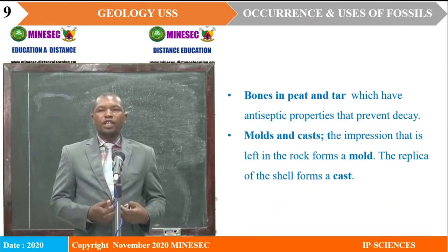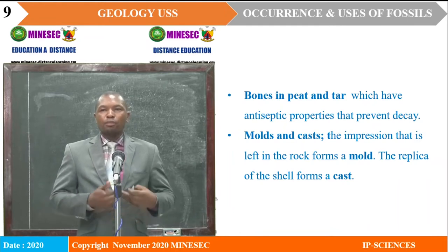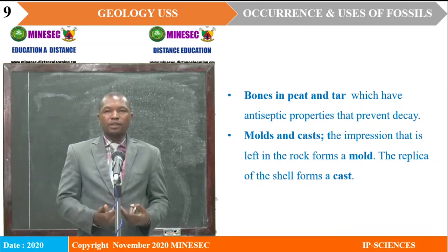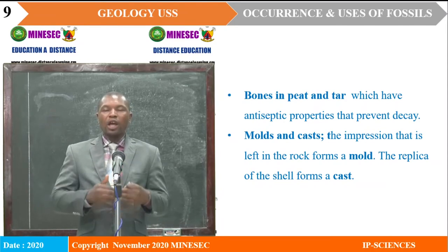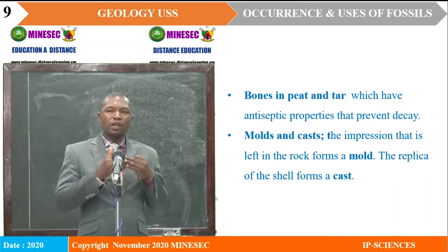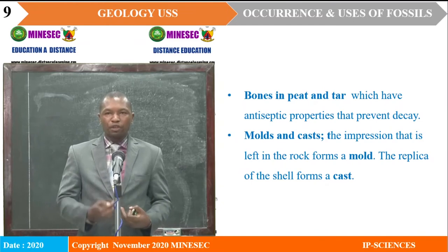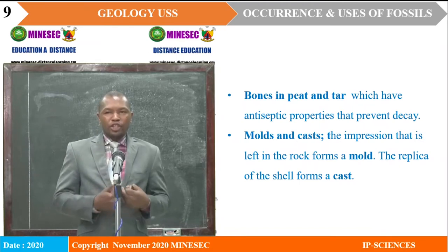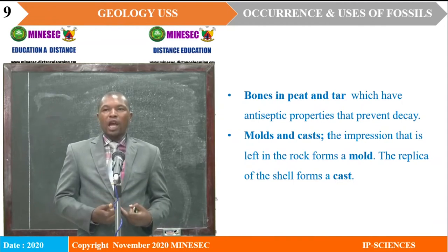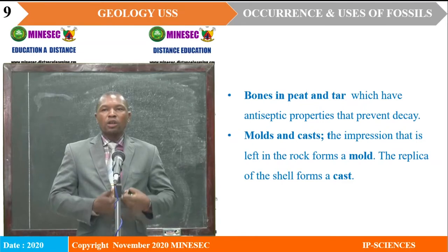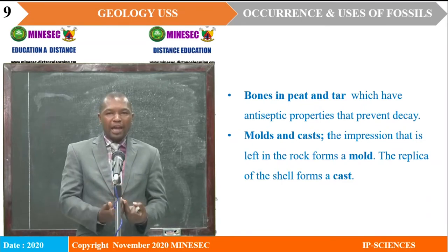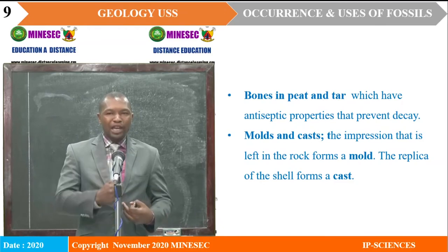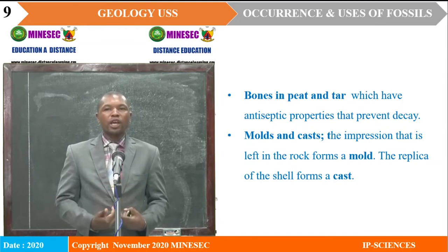We have bones in peat and tar, which have antiseptic properties that help preserve fossils without allowing them to decay — they tie the material and prevent any form of decomposition or destruction before preservation. Then we have molds and casts. These are impressions — we have internal and external molds — simply impressions left in the rock after the organism dies, with the soft parts removed, leaving only hard parts, which are later removed, leaving impressions. The replica of what is seen in the rocks is then referred to as a cast.